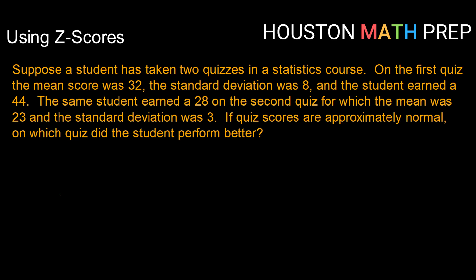So suppose a student has taken two quizzes in a statistics course. On the first quiz, the mean was 32. I'm just going to jot this stuff down as we go along. So here's quiz one. We have a mean of 32.